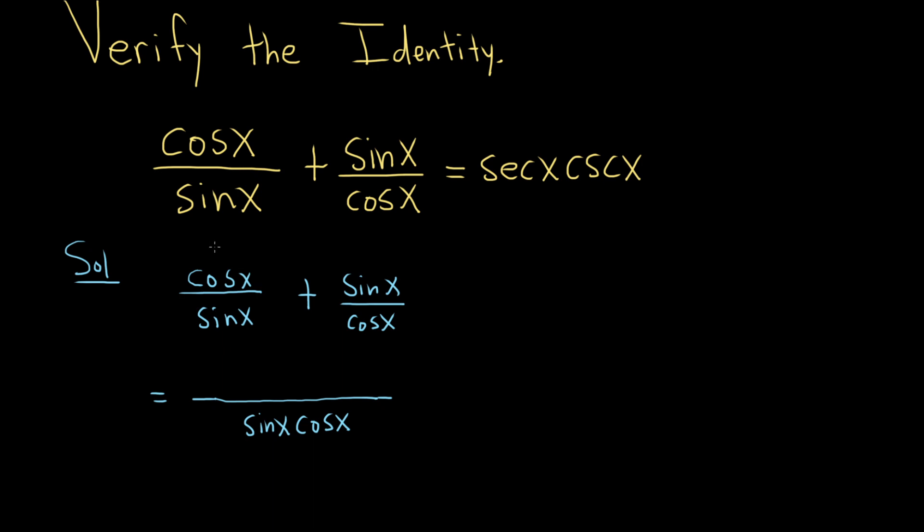Then it's going to be cosine x, that's what's here, times, and then you look here and you ask yourself, what's missing down here in order to get the LCD? You're missing the cosine, so times cosine. So it's cosine times what's missing, plus,